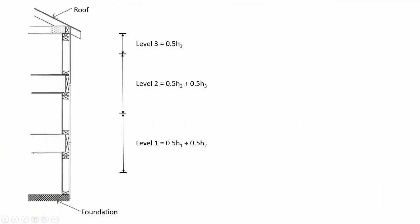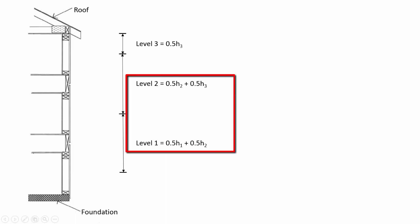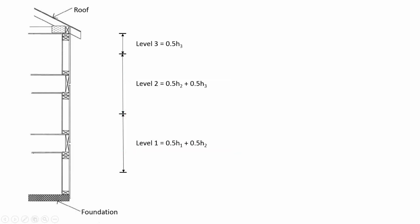The distribution of masses is based on the assumption that mass acts at the floor diaphragm. Therefore, for first and second level diaphragms of a three-story structure, 50% of the wall height below and 50% of the wall height above are taken for the total wall height mass acting on the floor diaphragm under consideration. Consequently, the roof diaphragm total wall height is only half of the wall height below, as there is no wall above.